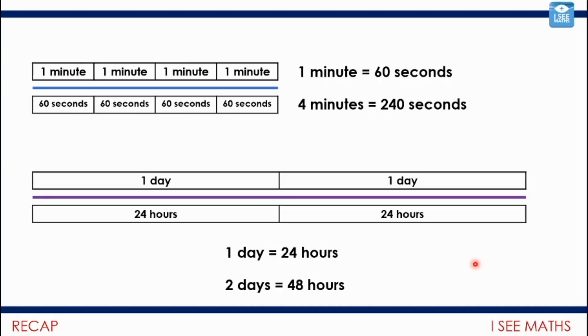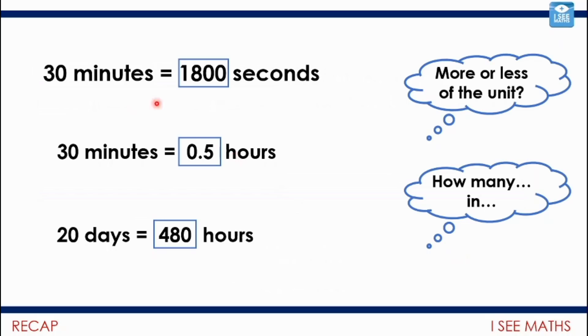Where we left off yesterday, we were looking at conversions between units of time. For example, a minute is the same as 60 seconds, so four minutes is 240 seconds because we're scaling up. Each time we have another minute, we have another 60 seconds. They're just different units of measure.